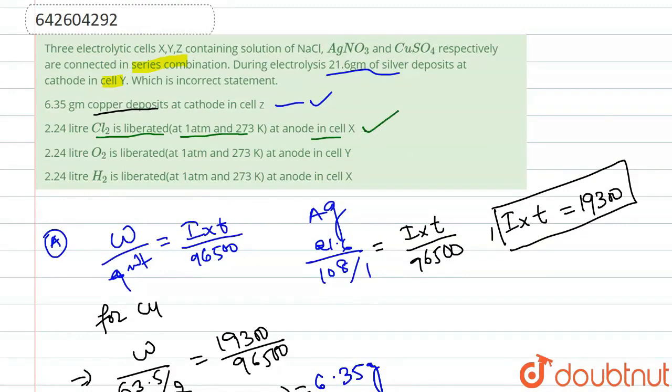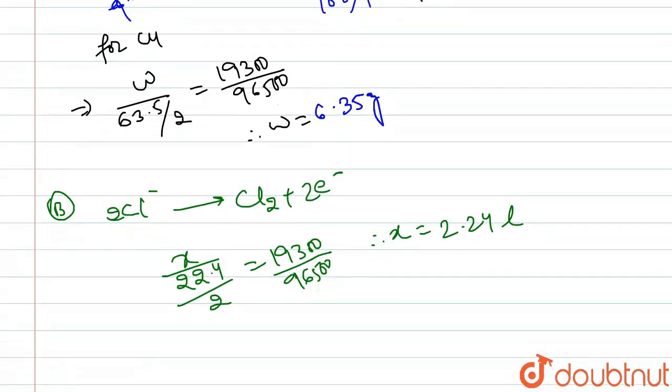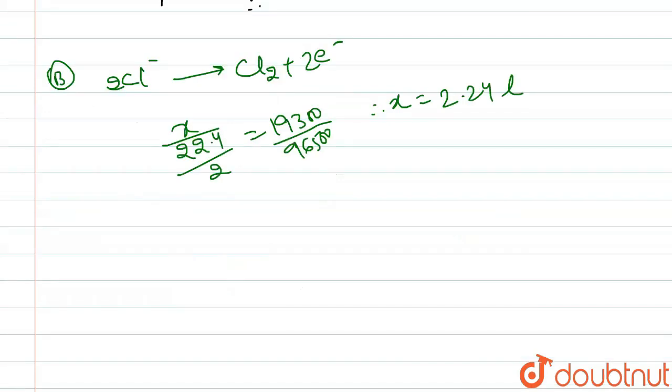Let's move toward our option C, which says O2 reaction at anode. Let us write our reaction of O2. For option C, n factor for O is equals to 4. For this reaction, we will write and take the weight as x again, 22.4 upon n factor equals to 19300 upon 96500.